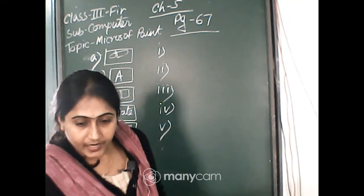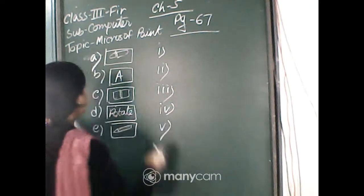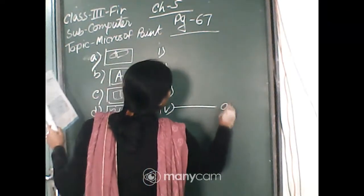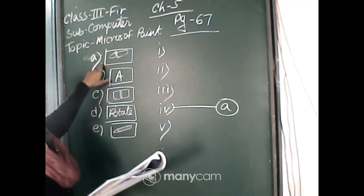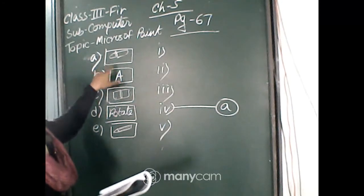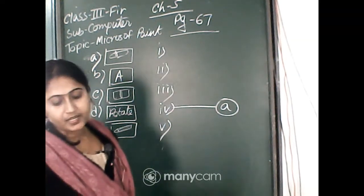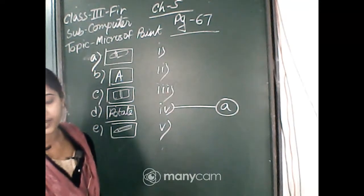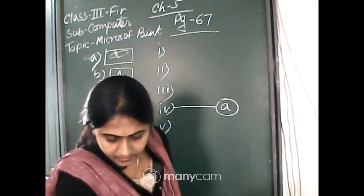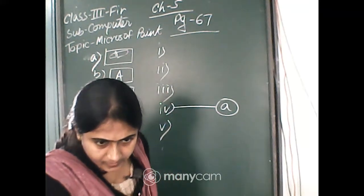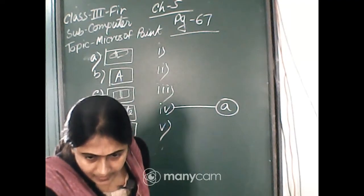The answer for A is option 4. The color picker tool is used to copy a color from one area of a drawing to another area of a drawing. Do you have any questions or queries? Can you hear me clearly? Please reply on chat.